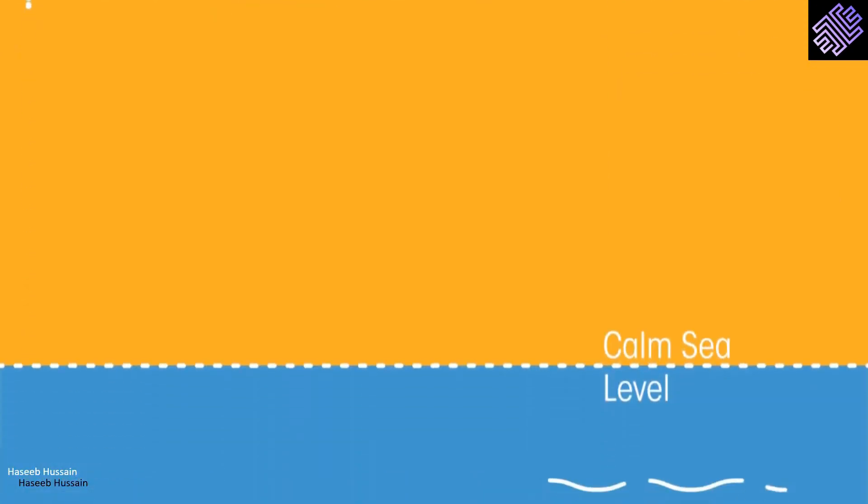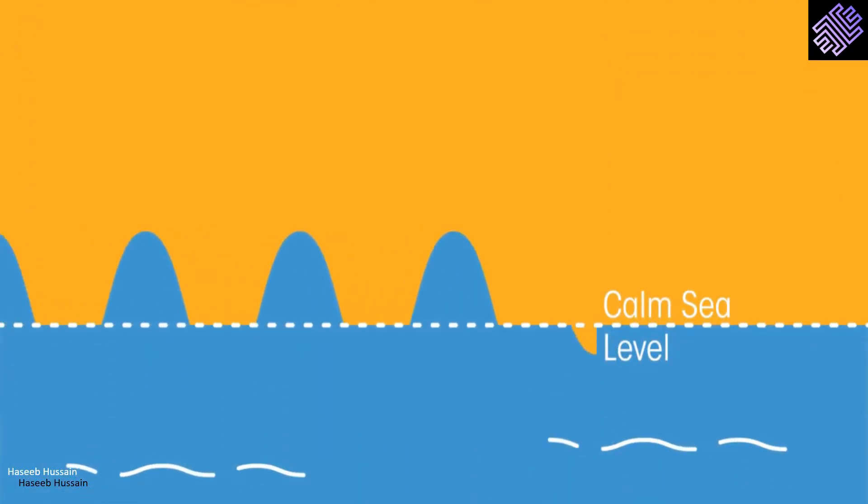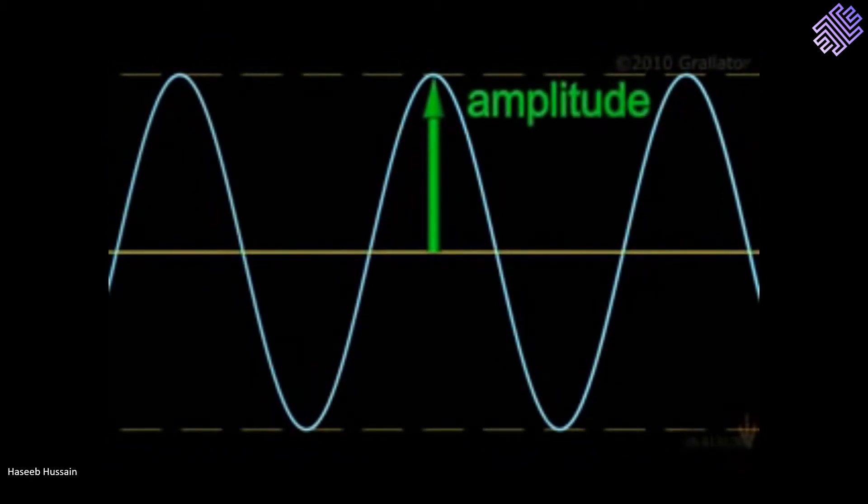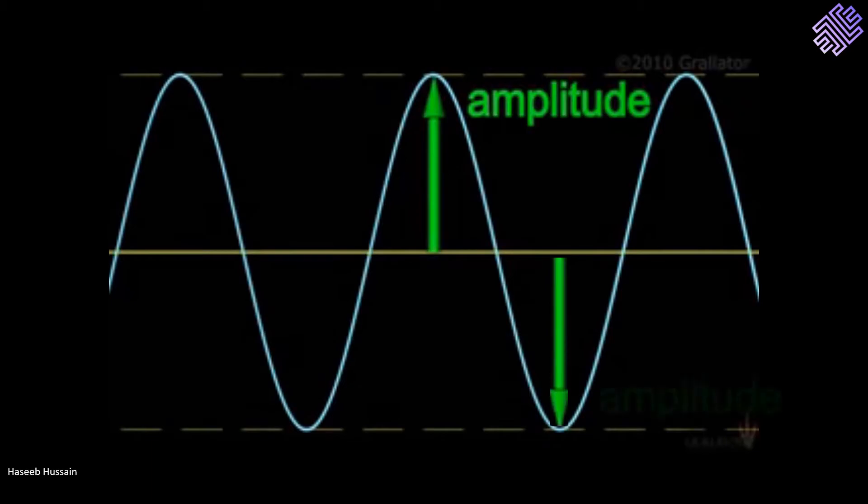Think of a very flat sea and then an incoming wave. The amplitude is the height of the top of the wave from the flat sea. We discussed that amplitude is the maximum distance vibrations move from the wave center line.